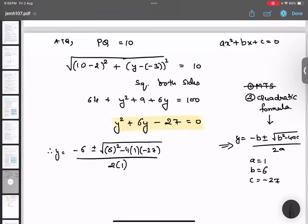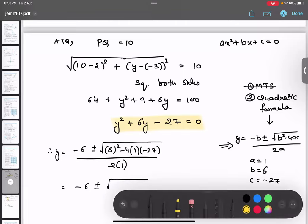Minus 6 plus minus. Let us solve the inside portion of the inside portion, this one, separately. 6 square is what? 36. Yes. 6 square is what? 36. 36.